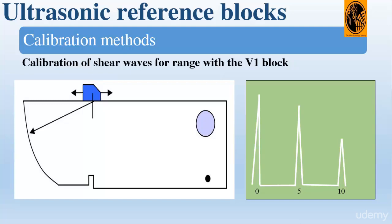First we place the probe on the V1 block and obtain the boundary echoes from the 100 millimeter radius, then establish the signal to more than 50% height using the gain control and maximize the echo by moving the probe backwards and forwards. Then we zoom in or out using the scale expansion range control to establish a second boundary echo at 200 millimeters. We place the signal from the 100 millimeter mark at position 5, which is half scale on the time base, and the signal from 200 millimeters at position 10, which is full scale, using the delay and range controls.